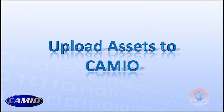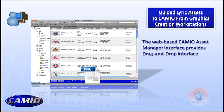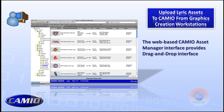Uploading assets to Cameo — this may not happen in every facility, but it's a web-based, cross-platform interface. The artist will have a group of files they want to upload to the system. They open up the web page, grab those files, and drag them onto the gray bar that says Drop Files Here. That begins the ingest process of adding images to the Cameo system through this asset management tool.